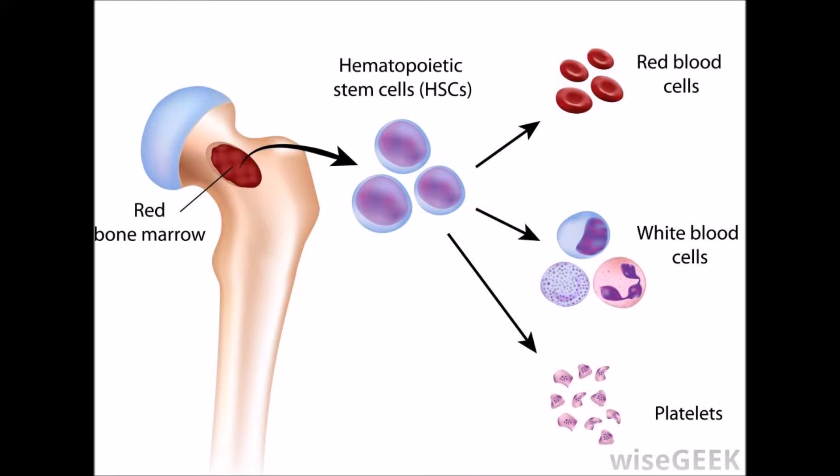P-32 is used to control certain cancerous diseases involving the excess of red and white blood cells made in the bone marrow.